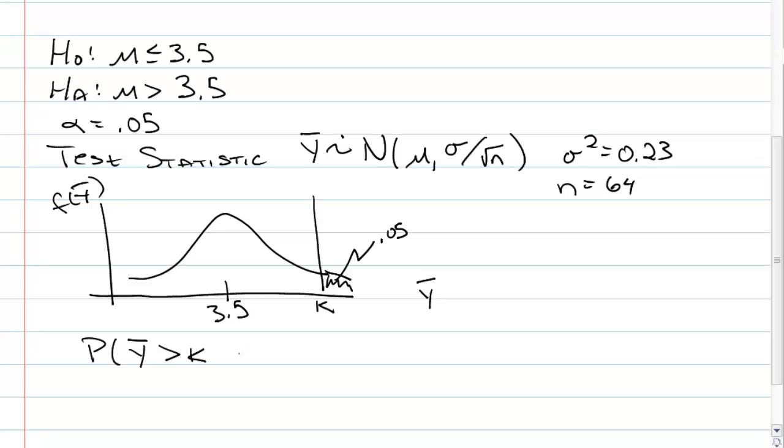Probability that y-bar, the random variable, is greater than k given that the null is true, this is our definition of a type 1 error. Probability we reject given that the null is true has to be 0.05.